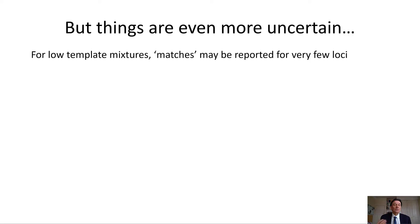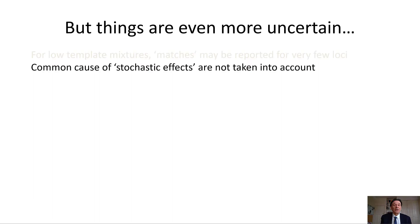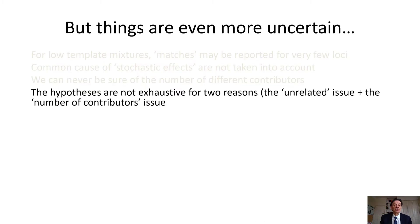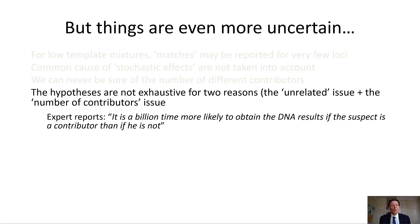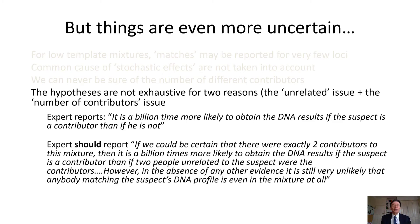Things are even more uncertain for low template mixtures, where matches may be reported for very few loci. We get the common cause of stochastic effects which are not taken into account. We can never be sure of the number of different contributors. The hypotheses are not exhaustive for two reasons: both the unrelated person issue and the number of contributors issue. So when an expert reports that it's a billion times more likely to obtain the DNA results if the suspect is a contributor than if he is not, what the expert should report is: if we could be certain there were exactly two contributors to this mixture, then it's a billion times more likely we'd obtain the DNA results if the suspect is a contributor than if two people unrelated to the suspect were the contributors. However, in the absence of any other evidence, it's still very unlikely that anybody matching the suspect's DNA profile is even in the mixture at all.